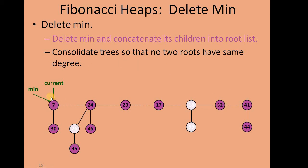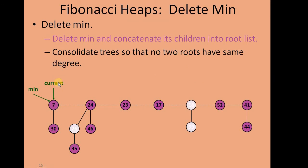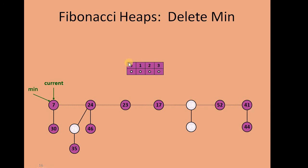We start by marking the leftmost root node as the minimum and current node. Once we delete the node and bring the three children up into the root list, we move to the leftmost node and make it the min and current node. Then we create a buffer with the same size as the maximum height of the tree in this Fibonacci Heap plus one. Looking at the heights: 1, 2, 1, 0, 1, 0, and 1 — giving us heights 0, 1, 2, and 3.